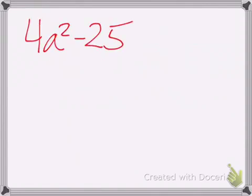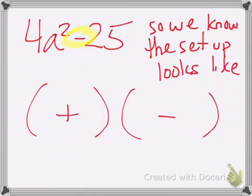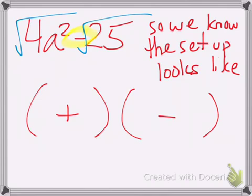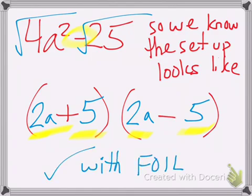Next example: 4a squared minus 25. Notice that every single example you're about to see will always be subtracting — that's how you know it's going to be a situation where you have opposite binomials. The setup is going to be two binomials where the signs are opposite. You basically square root both 4a squared and 25 to get the values that fill in the blank spots. So 4a squared square rooted gives you 2a, and 25 square rooted gives you 5. You can always check with FOIL.